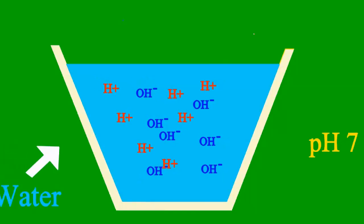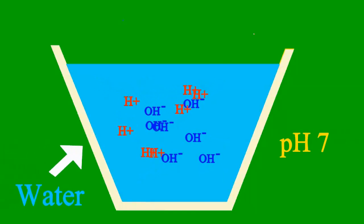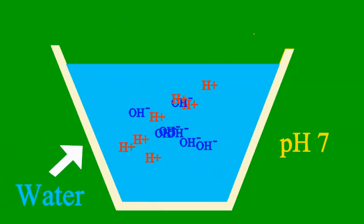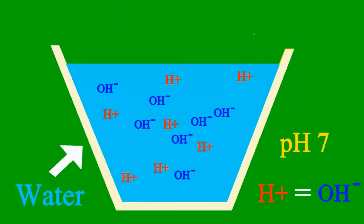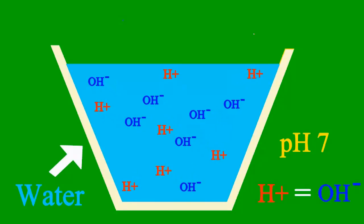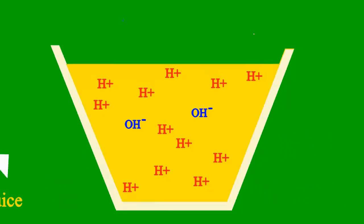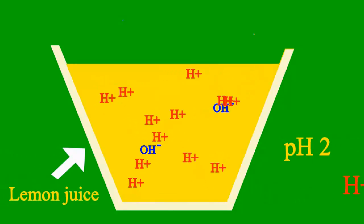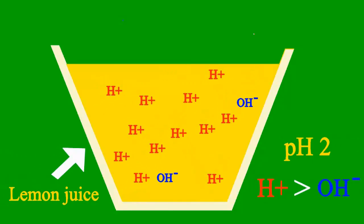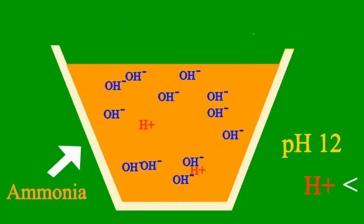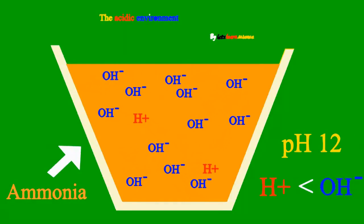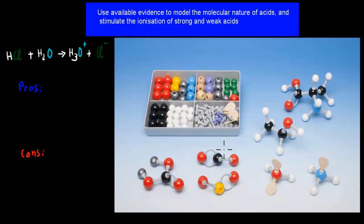When the pH is 7, it's a case where the sample is neither an acid nor a base. But less than 7, it's an acid. More than 7, it's a base.